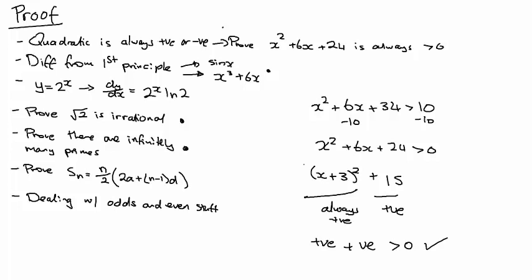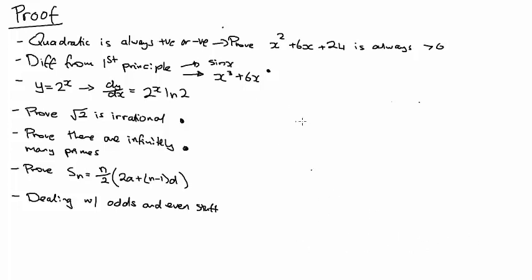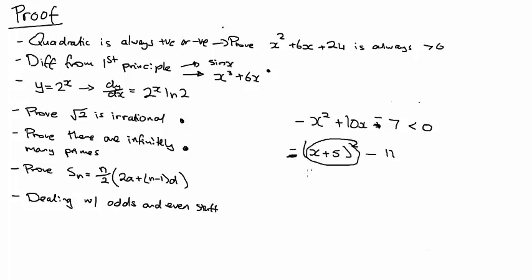The opposite is showing something is always negative. Say they gave you minus x squared plus 10x minus 7, and asked you to show it's always less than zero. You complete the square again, and what you get is a negative of a squared term, which is always negative, and then you're taking away a positive number as well. So you've got negative take away something positive — you can see it's always negative. That's the first proof sorted.